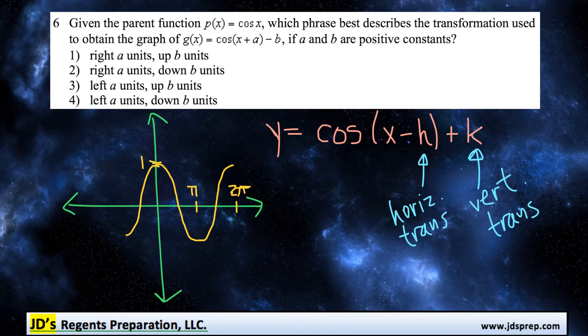This is question number 6 from the June 2017 Algebra 2 exam. Given the parent function p(x) equals cos(x), which phrase best describes the transformation used to obtain the graph of g(x), being cos(x+a) minus b, if a and b are both positive constants?